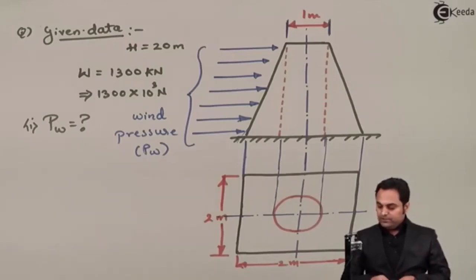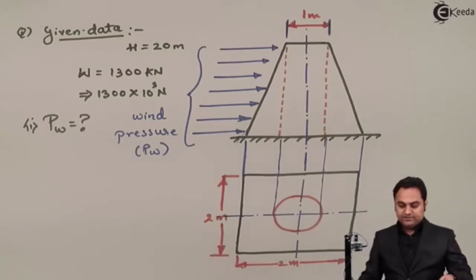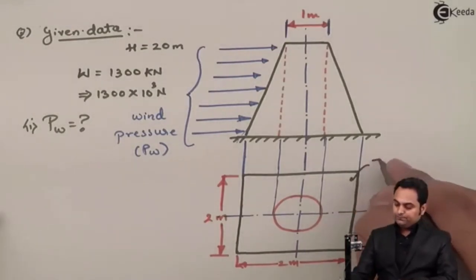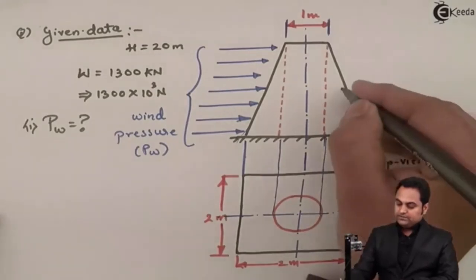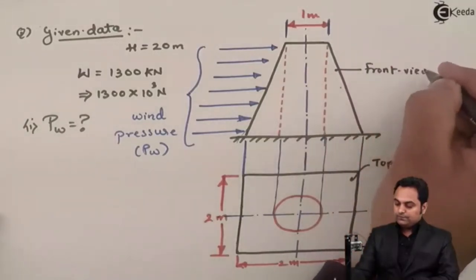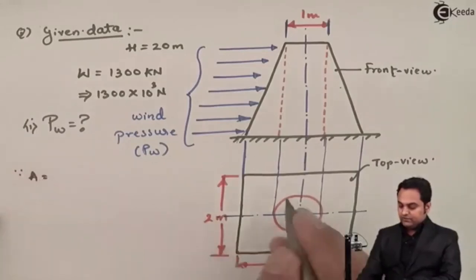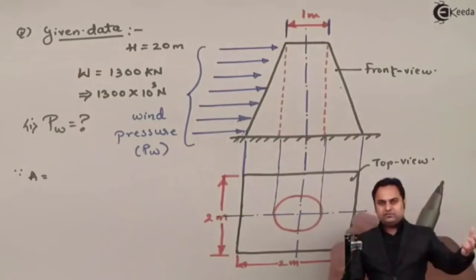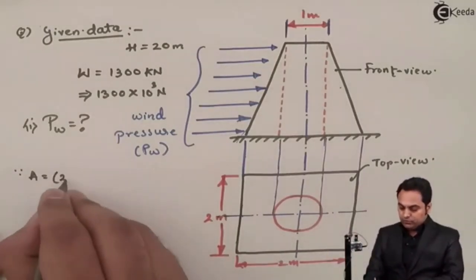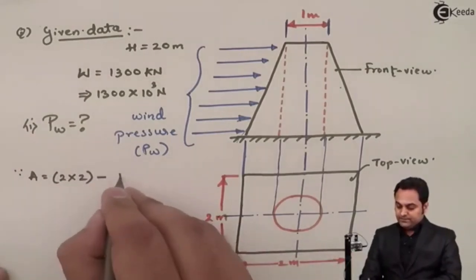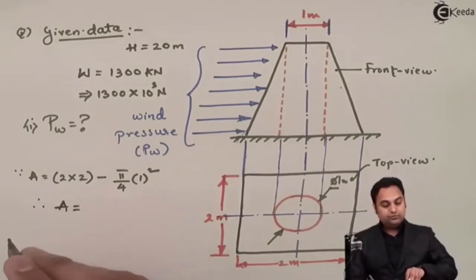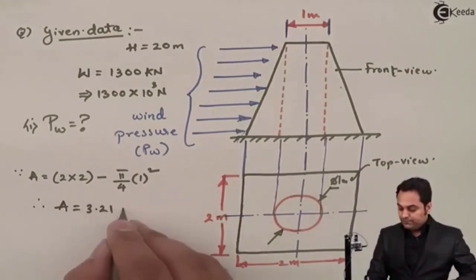First, we calculate the cross-sectional area from the top view. We subtract the circular flue area from the square area: Area = 2 × 2 minus π/4 × (1)² giving an area of 3.21 m².